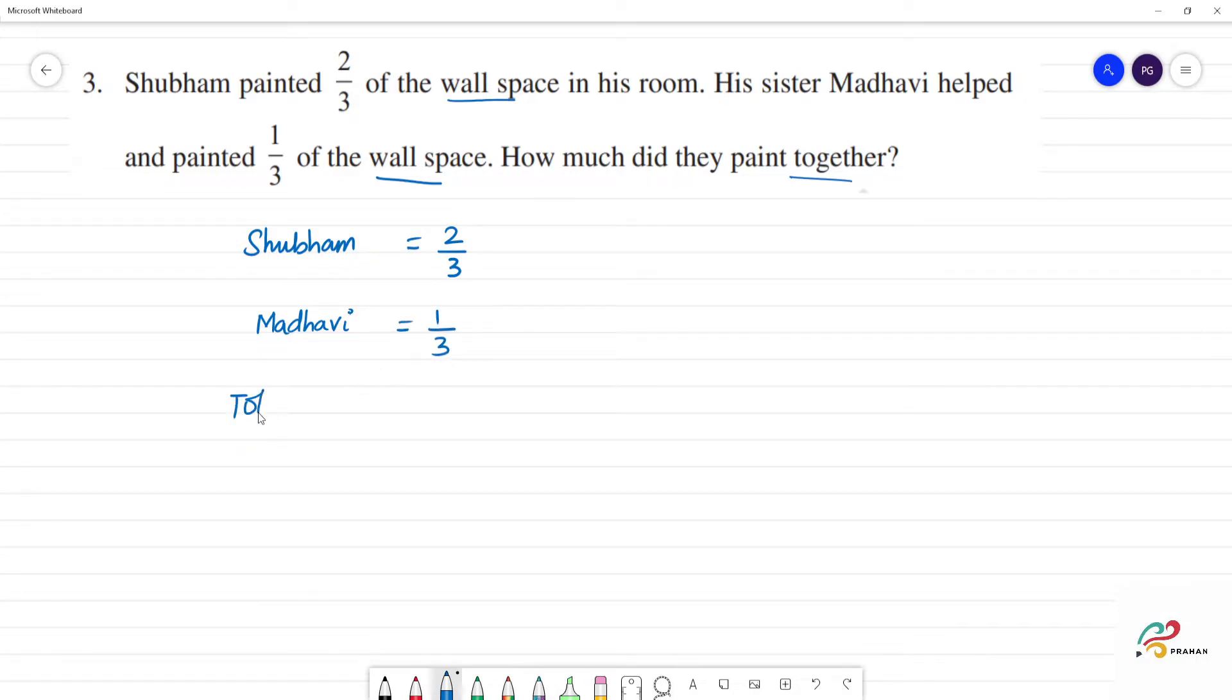So, total together, how much did they paint? 2 by 3 plus 1 by 3.